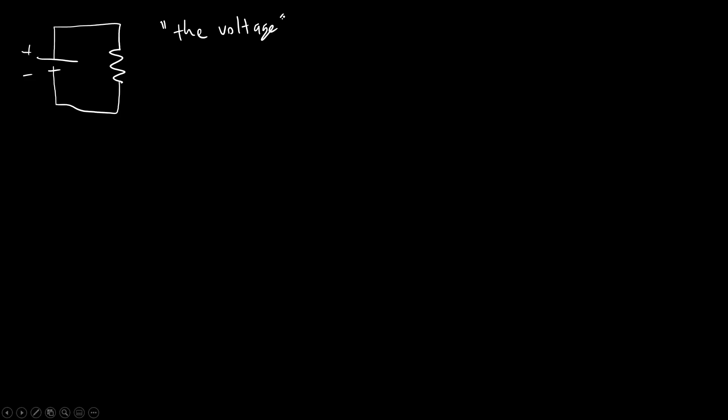The voltage drop across the resistor. And since this is just a simple circuit with these two components connected like this, the voltage of the battery is equal to the voltage drop across the resistor.